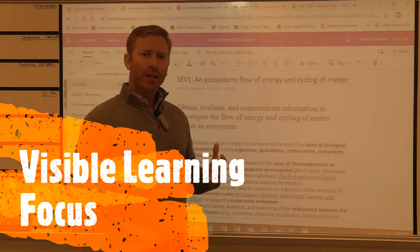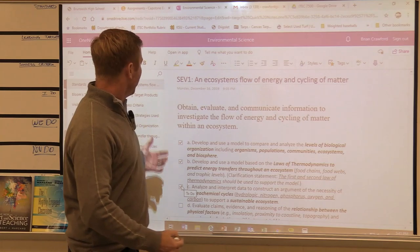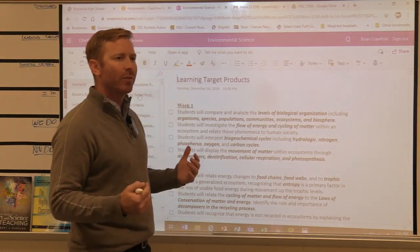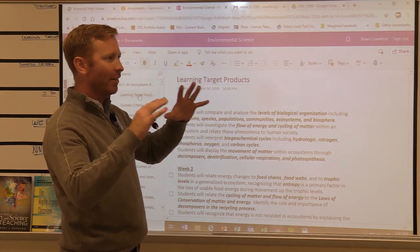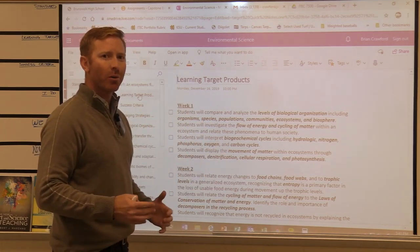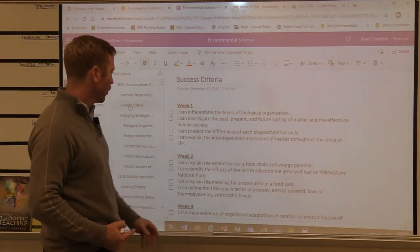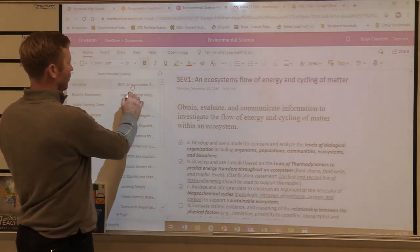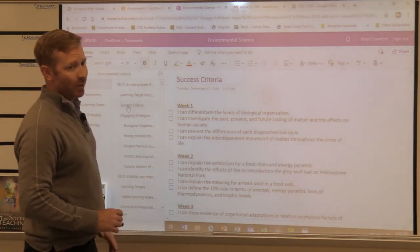Once we identify the standards we're going to instruct and the students are going to learn, we venture on and talk about the learning targets. This is a big focus with visible learning instruction — making sure that students are able to see exactly what the process is. You tell them to trust the process; they've got to understand what the process is and where we're going. For standard one, we have our standard, our learning targets that we can check off, and our success criteria.